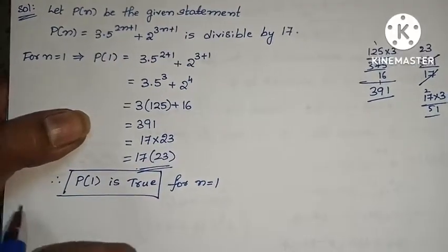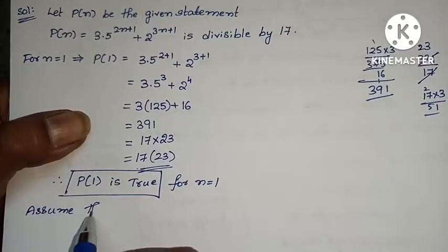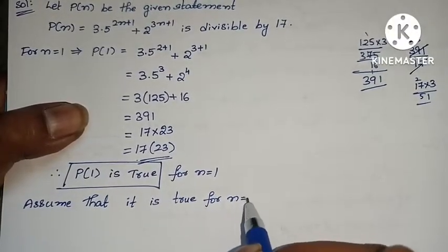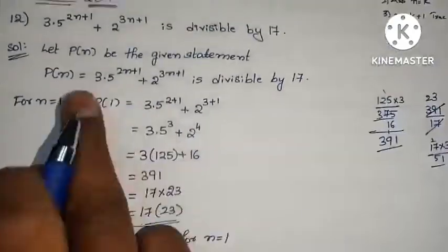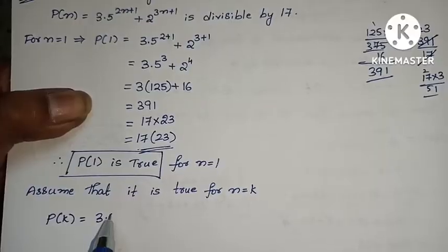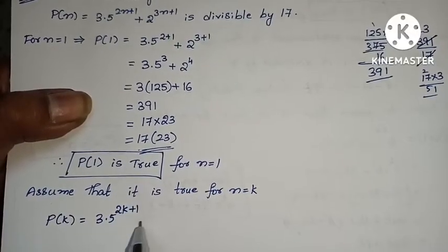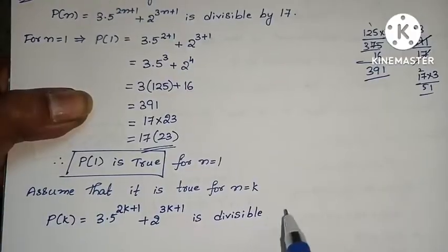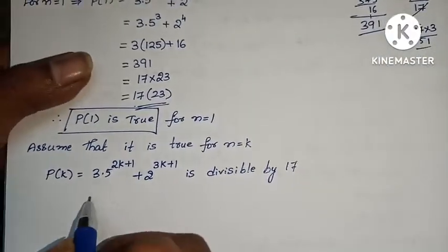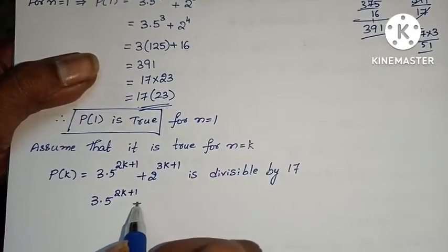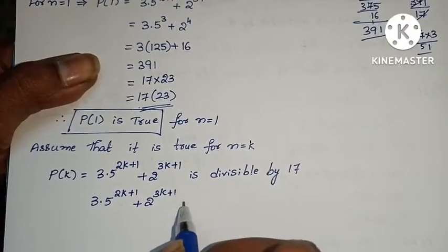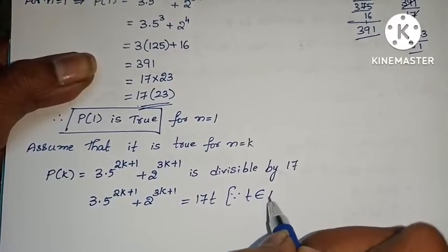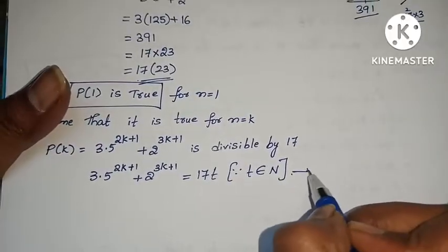Next, assume that it is true for n equals to k. So P of k equals: 3 into 5 power 2k plus 1 plus 2 power 3k plus 1 is divisible by 17. That means 3 into 5 power 2k plus 1 plus 2 power 3k plus 1 equals 17t, where t belongs to natural numbers. Call this equation 1.